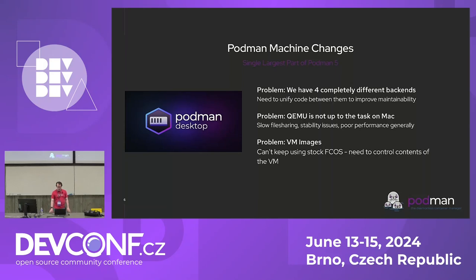The biggest thing in 5.0 are the Podman Machine changes, largely to support Podman Desktop and our initiative to put Podman in front of more people on Macs and Windows. The first big problem: we had four completely different backends — separate supported virtual machine engines with very little code sharing. We were supporting QEMU on Linux, Apple Hypervisor and QEMU on Mac, and WSL plus Hyper-V on Windows. We were running into a maintenance nightmare as we tried to patch things in five different places whenever we needed to fix something.